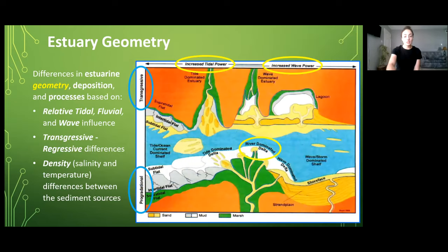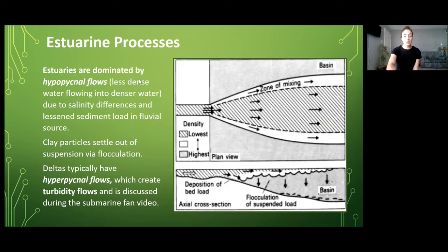So now that we have some of that classification, terminology, and geometry out of the way let's get into the deposition and processes in estuarine systems. Like we talked about previously, the density of the inflow versus the basin of water will influence the deposition in estuary environments. Luckily there's only one flow type that is typical of estuarine environments. This makes it easy to distinguish estuaries from other depositional systems in the rock record.